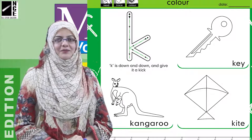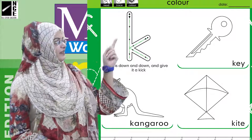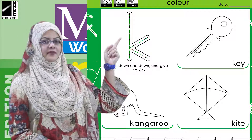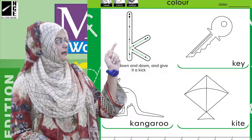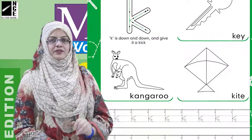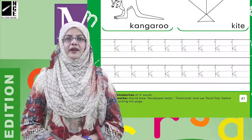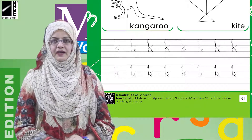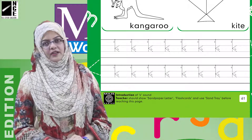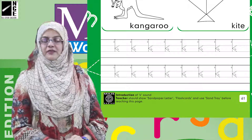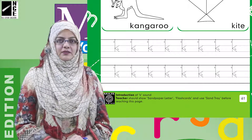اس کے اوپر dotted lines میں ہم نے tracing کرنی ہے۔ آپ کو تو پہلے سے ہی پتہ ہے، ماشاءاللہ — آپ لوگ سمجھ جاتے ہیں کہ dotted lines دی گئی ہیں تو ہمیں tracing کرنی ہے۔ Tracing کرنے کے بعد نیچے کچھ lines ہیں جن پر dotted 'کھ' دیے گئے ہیں — ان کے اوپر بھی tracing کرنی ہے بہت اچھے سے۔